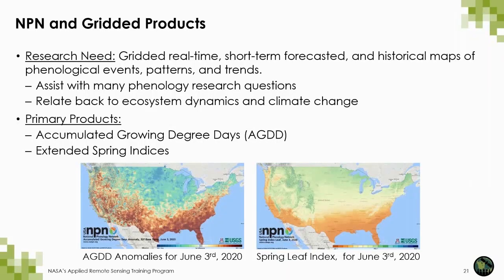As we discussed during the last session, the NPN produces data and products in a wide range of formats, including gridded real-time, short-term forecasted, and historical maps of phenological events, patterns, and trends. These include predictions of accumulated temperature, or accumulated growing degree days, and the extended spring indices. Accumulated temperature is a strong driver of seasonal transitions in plants and animals, including leaf-out, flowering, fruit ripening, and migration. For many plants and animals, there's a specific amount of heat that must be accumulated to trigger a change, referred to as growing degree thresholds.